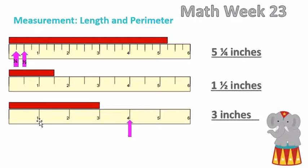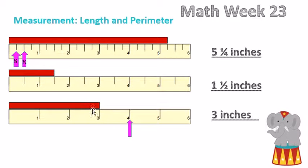You may also see a ruler that just has lines directly next to whole numbers. Wherever that stripe comes to, it is that number it lands on — here it is three, so that measurement is three inches. This red stripe would be one and a half inches, and this one would be five and one quarter inches.